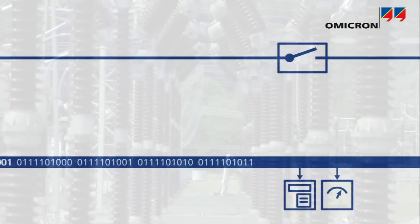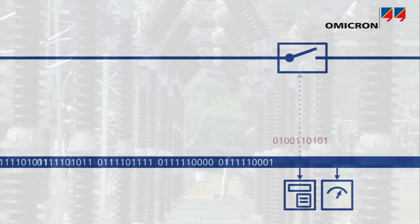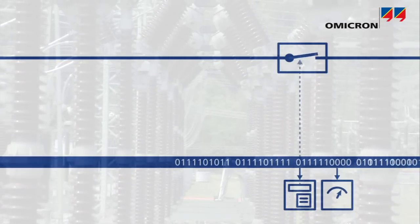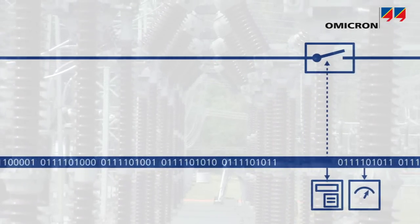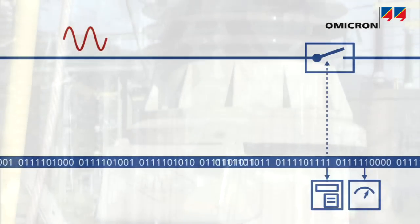Binary information like switch positions or switching commands can be transmitted via the substation network. Analog voltage and current values can also be transmitted.